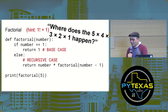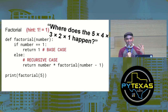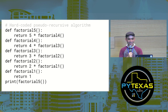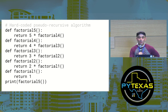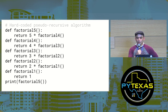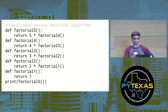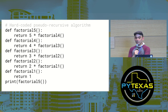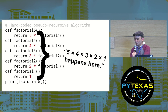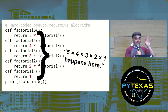Where does five times four times three times two times one actually happen? It's hard to imagine because the call stack changes across time. Here's another way to see it: let's hard-code our recursive function as multiple separate functions. Factorial-five returns five times factorial-four's return value; factorial-four returns four times factorial-three's return value; and so on until factorial-one, which just returns one. In a recursive example, all of this is collapsed into one function.